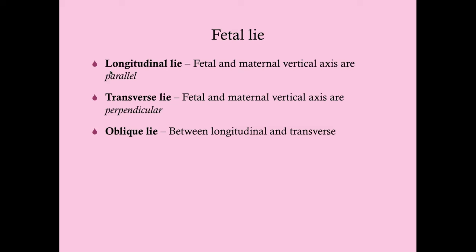You can have a longitudinal lie where the axes are parallel, but still have a problem — for example, a breech presentation where the baby's head is at the top and the butt at the bottom. That's still a longitudinal lie, but not what we want. So not all longitudinal lies are normal, but all normal cases will be longitudinal lie. A transverse lie is where the baby's vertical axis is roughly perpendicular to the mom's. An oblique lie is somewhere in between — kind of diagonal.